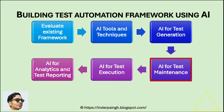Step four: Implement AI for test maintenance. AI for test automation can help with predictive maintenance. It can automatically identify the test scripts that need updates based on system changes.